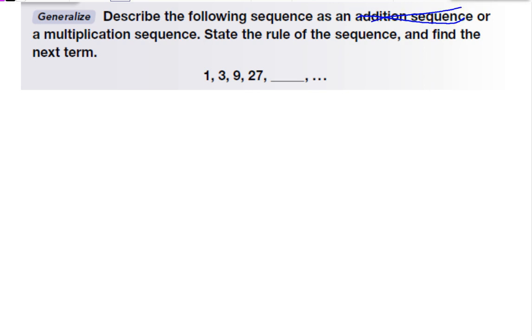So that means it has to be multiplication. So I'm going to look again and think okay, 1 times what is 3? Well 1 times 3 is 3. And then 3 times 3 is 9. And 9 times 3 is 27. Since the rule is the same, my rule is to multiply by 3.